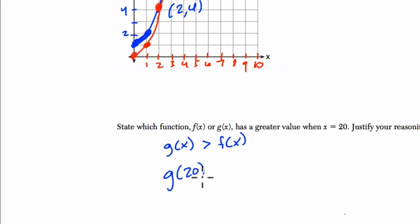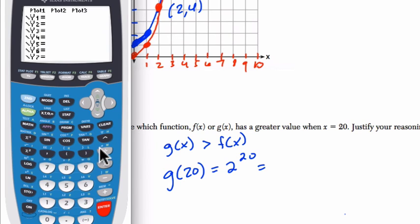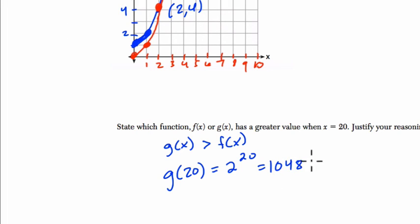Why? Because g of 20 equals 2 to the 20th. And if you plug that into your calculator, 2 to the 20th is over, we have over a million here. It's 1,048,576, but f of 20 is just 20 squared, which is only 400.